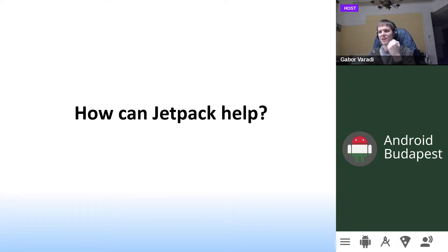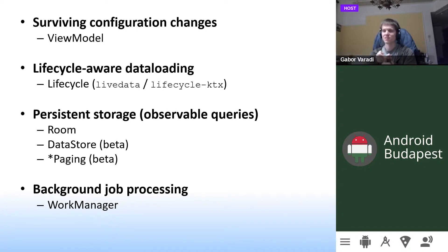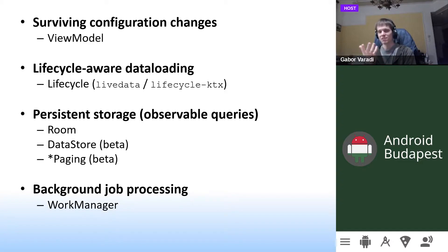How can Jetpack help us? For surviving configuration changes and storing data, we can use ViewModel — it is essentially the only non-deprecated way to keep data alive across configuration changes. You used to be able to use `getLastCustomNonConfigurationInstance` but that's deprecated, and retained fragments are also deprecated. So only ViewModel remains. For lifecycle-aware data loading you can use LiveData and lifecycle observers to propagate whether the observer is actually interested in receiving events.